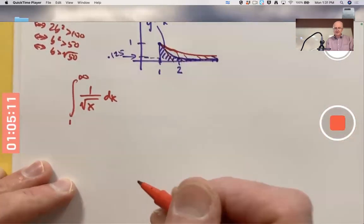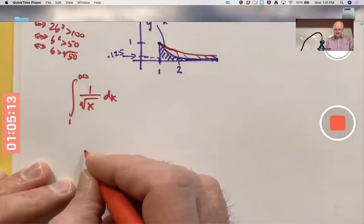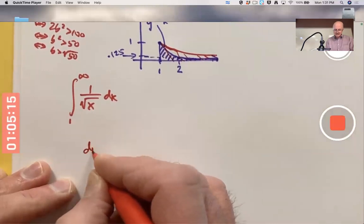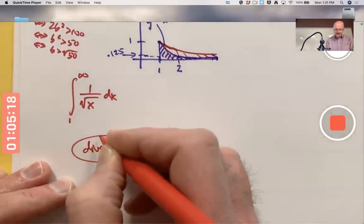However, because it doesn't approach the x-axis very fast, it turns out its area is infinite. And this improper integral is going to be divergent. It's going to, we say it diverges. I haven't proved that yet, but that's what's going to happen.